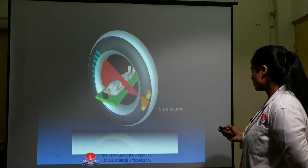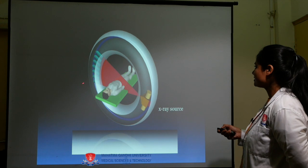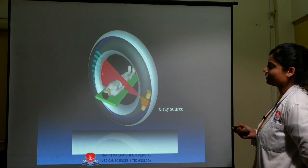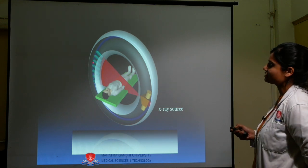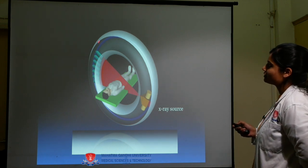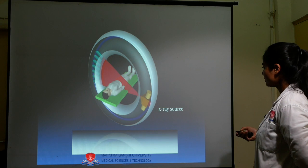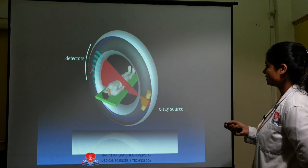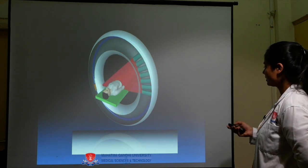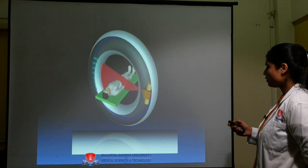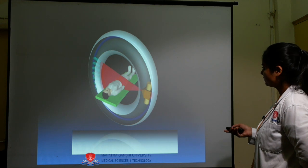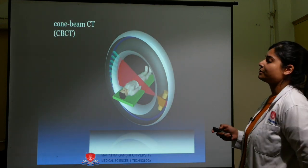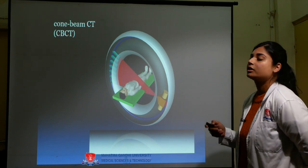This diagram shows the craniofacial CBCT setup: the X-ray source and detectors are mounted on the gantry, with the patient lying on the table. When the X-ray source starts, the detectors on the gantry revolve around the patient, detect the image, and project it onto the computer.